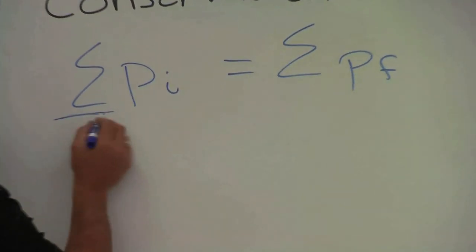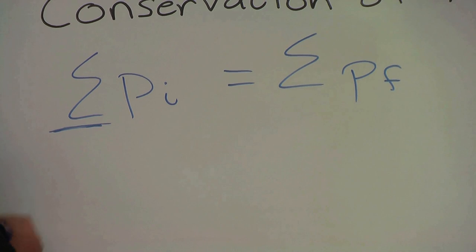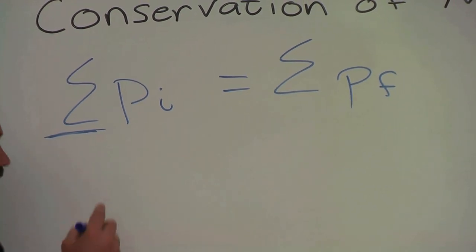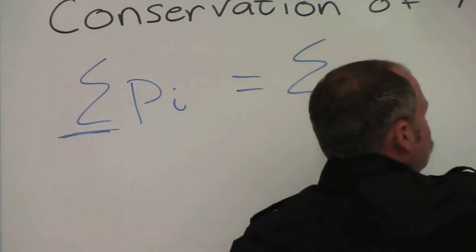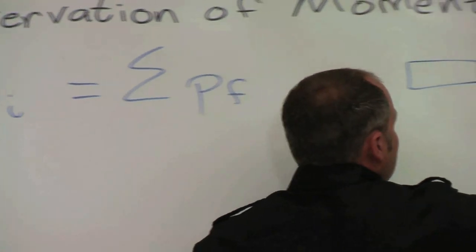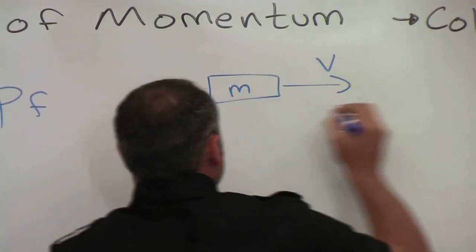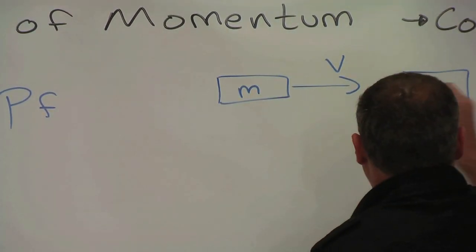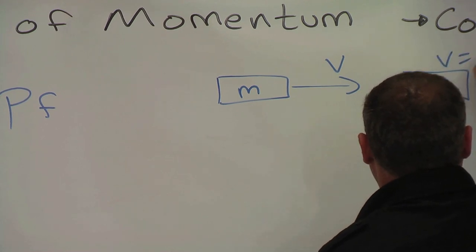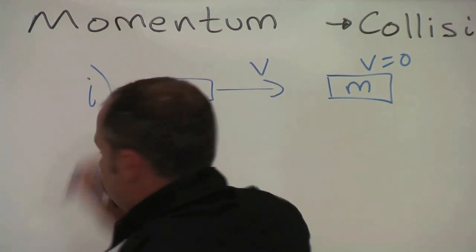This is just the sum sign, it just means add them up. So initially I have two objects. Always good to draw a picture. This guy is going in with some speed V, has some mass M. This guy is just sitting here. So this is the initial situation.